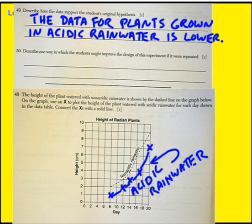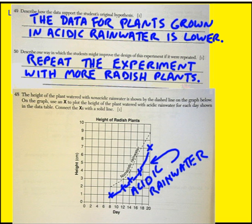The next question asks us to describe one way in which the students might improve the design of this experiment if it were repeated. A good way to answer this type of question is to always think of how could I collect more data. They could repeat the experiment with more radish plants. If you remember the original paragraph, they said they only used two plants, one in non-acidic and one in acidic. It would be better if they could do it with more plants. Now, that's not the only way that they could collect more data. They could do it for longer periods of time. There are other ways that this could be improved, but this is probably the most obvious answer. They could repeat the experiment and they could do it with more plants and collect more data.